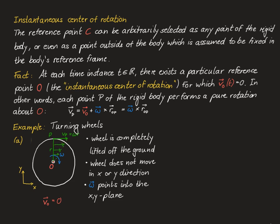We can apply the same reasoning to any other point on the wheel. In conclusion, each point has a velocity vector expressed in terms of the instantaneous center of rotation — which is at rest — and the angular velocity omega. The velocity vectors point in the angular coordinate direction (in polar coordinates), with magnitude increasing proportionally to the radial distance from the instantaneous center of rotation.